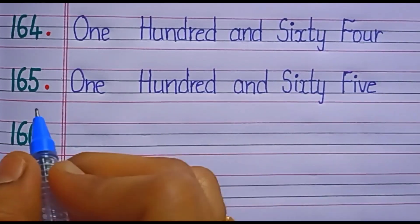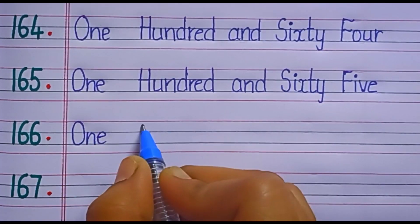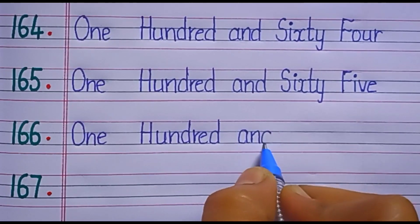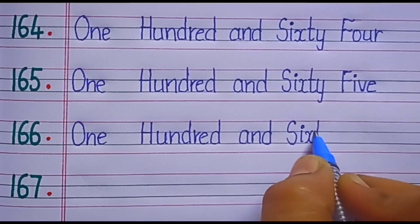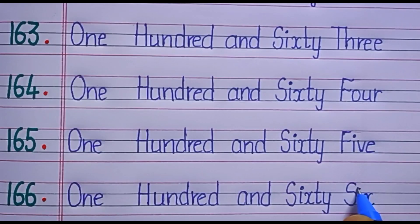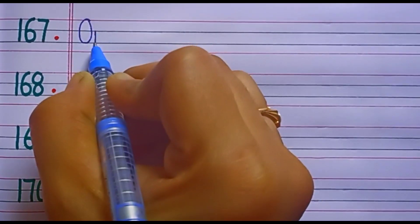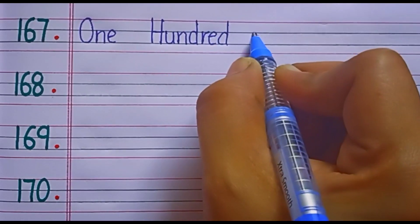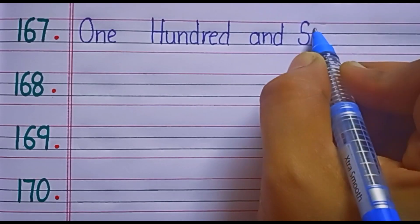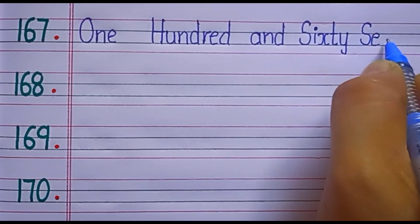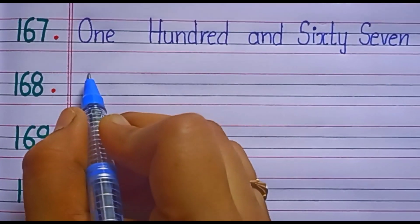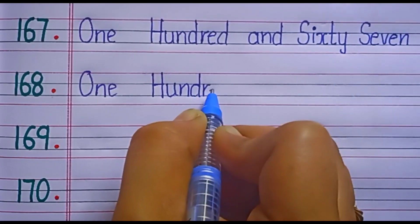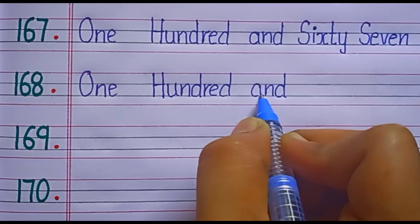One hundred and sixty-six. S-I-X-T-Y, sixty. S-I-X, six. Sixty-six. One hundred and sixty-seven. S-I-X-T-Y, sixty. S-E-V-E-N, seven. Sixty-seven. One hundred and sixty-eight. S-I-X-T-Y, sixty. E-I-G-H-T, eight. Sixty-eight.